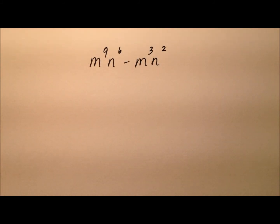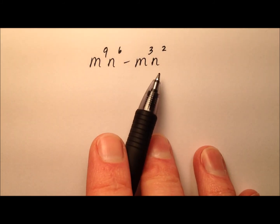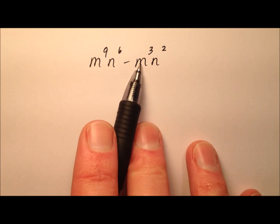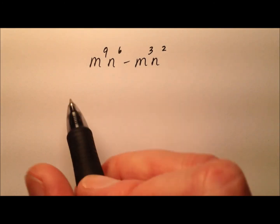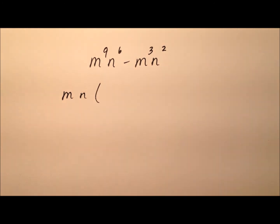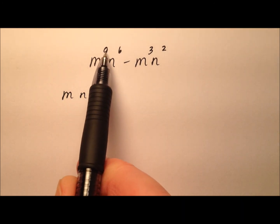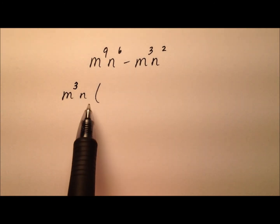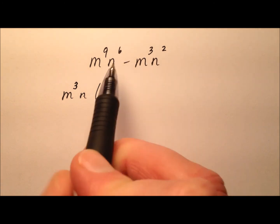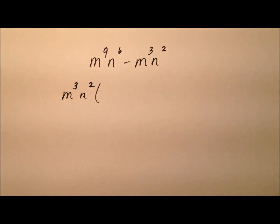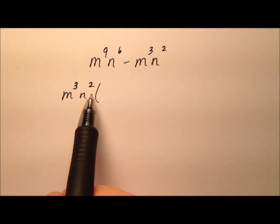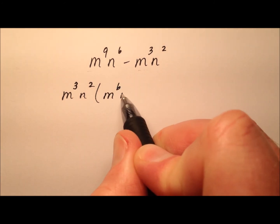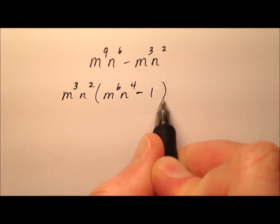In this final example, we look at an algebraic expression with only variables. Both terms have m's and n's, so we factor out the greatest common factor. For m: the terms have m to the 9th and m cubed, so 3 is the smaller — pull out m cubed. For n: we have n to the 6th and n squared, so 2 is smaller — pull out n squared. Dividing this GCF out of each term gives m to the 6th n to the 4th minus 1.